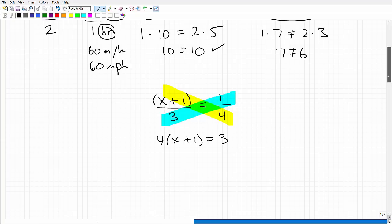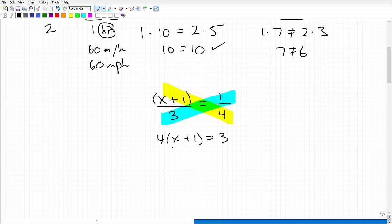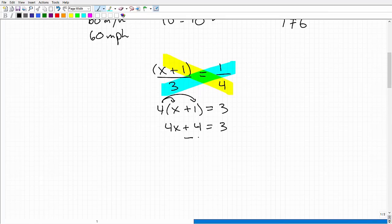Now at this point forward, this is all about your equation-solving abilities. What we're going to do is apply the distributive property. So it's going to be 4 times x plus 4 times 1, which is 4, is equal to 3. Now what do we do? We want to go ahead and subtract that 4 from both sides of the equation.